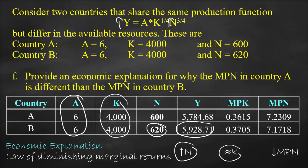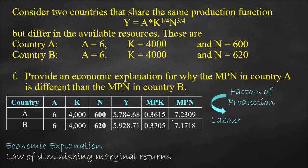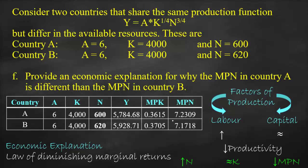A country with higher labor will have a lower MPN because hiring one additional employee yields lower productivity when capital remains constant. If we increase labor without increasing capital, workers don't get enough machines to use. Consequently, there is a negative relationship between increasing labor and its productivity — the marginal product of labor — based on the law of diminishing marginal returns.